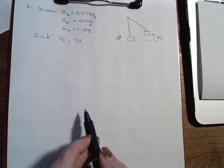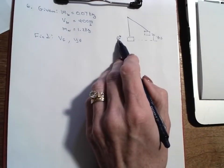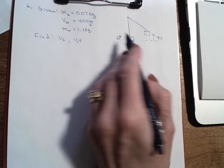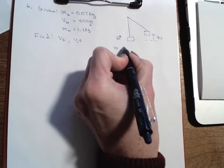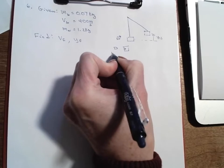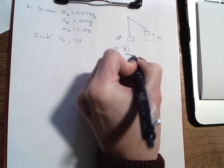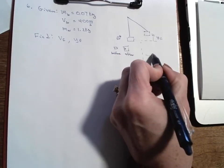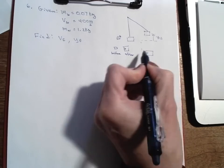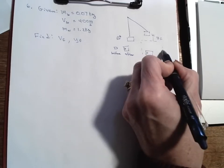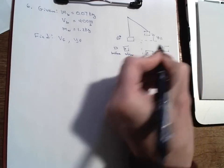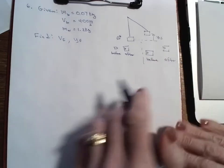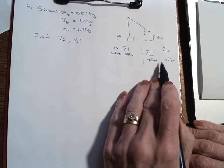We're going to think about this problem in two steps. The first step involves the bullet before it hits the wood and then after — the bullet alone versus the bullet embedded in the wood. Then we'll have a second before-and-after stage. I'm going to treat them completely separately: this first stage using momentum, and the second stage using energy.